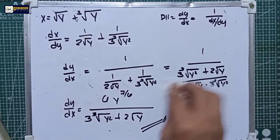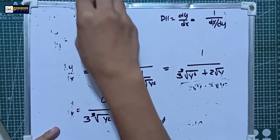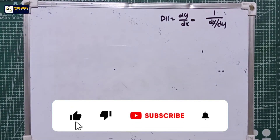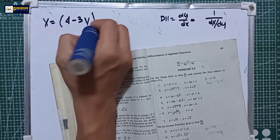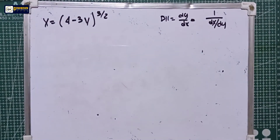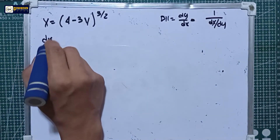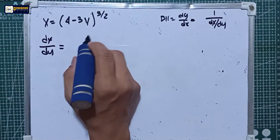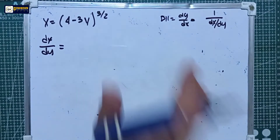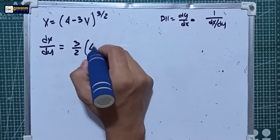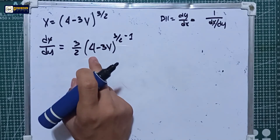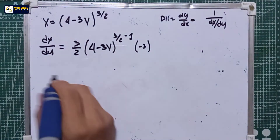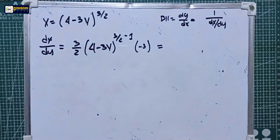Let's proceed to problem three, which is number ten in the book. We have x equal to (4 minus 3y) raised to 3 over 2. We will derive this equation with respect to y using the power rule. So dx over dy equals 3 over 2 multiplied by (4 minus 3y) raised to (3/2 minus 1), multiplied by the derivative of (4 minus 3y), which is negative 3.